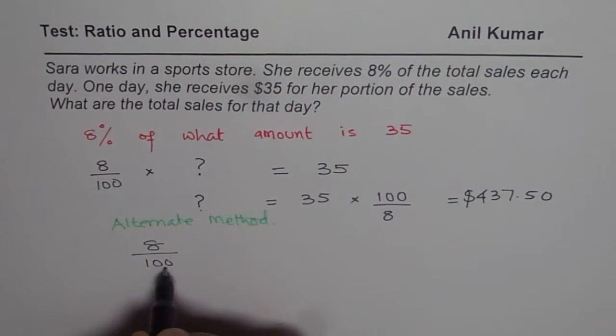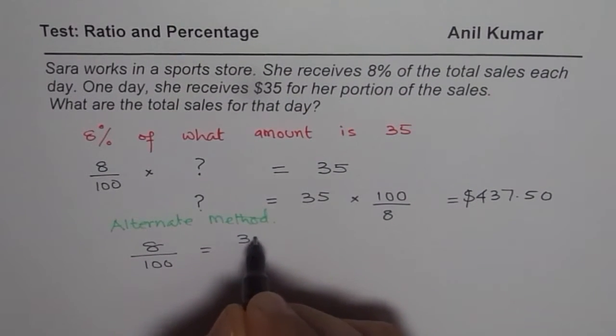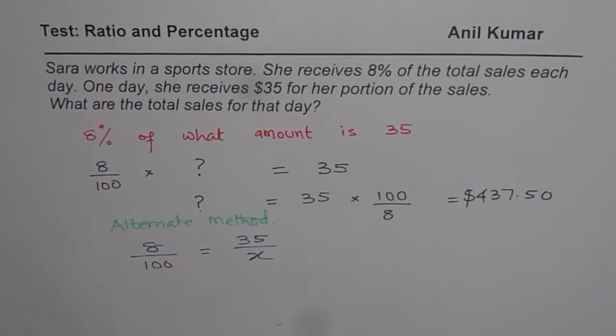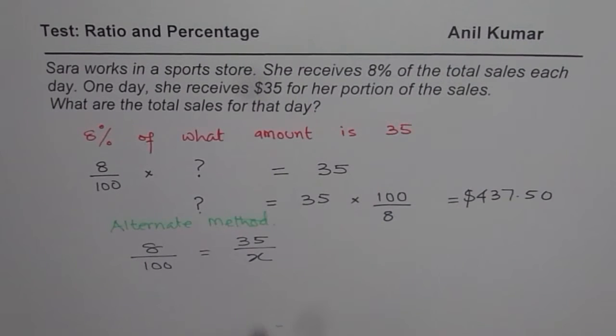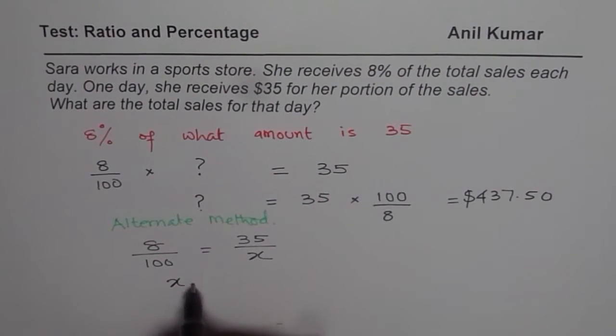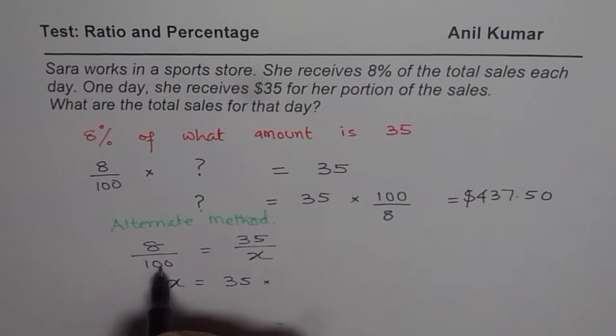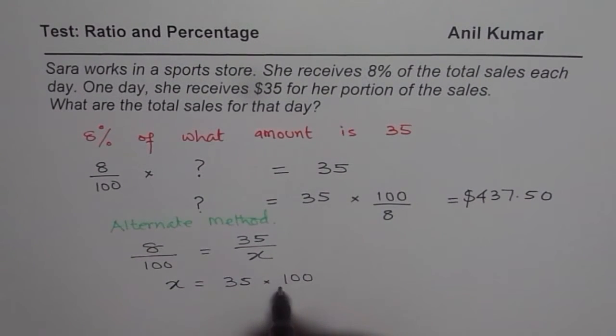If the total amount is 100, she gets $8. But in this case, she gets 35 out of what? We don't know. So we are putting x for it. So this equation helps us to solve the question. So from here we cross multiply and say x is equal to, we are left with 35 times 100 over 8.